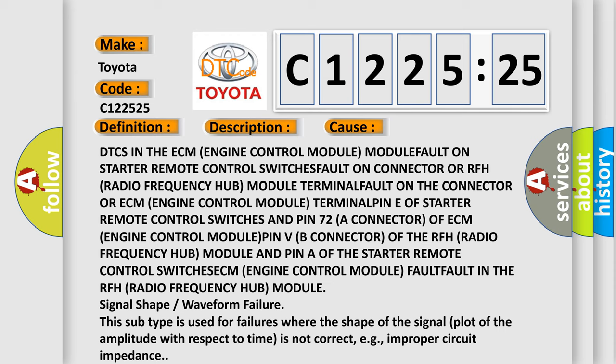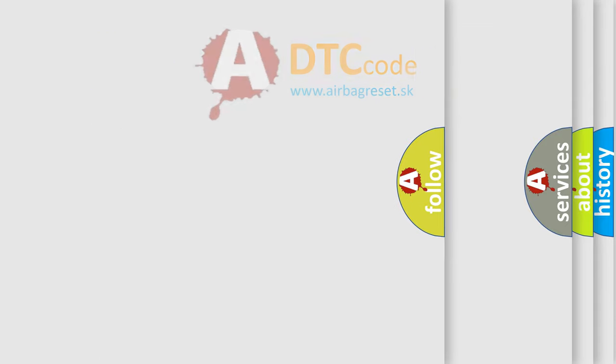This subtype is used for failures where the shape of the signal plot of the amplitude with respect to time is not correct, e.g., improper circuit impedance.